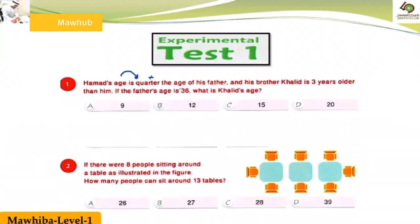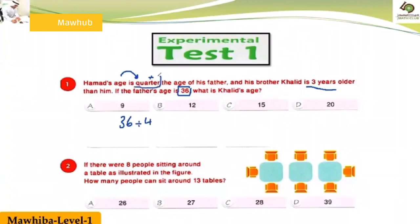Hamad is a quarter the age of his father, and his brother Khalid is three years older than him. If the father's age is 36, what is Khalid's age? So now we want to find Hamad's age first — divide 36 by four, because it asks about a quarter. 36 divided by four is what? Can you tell me?